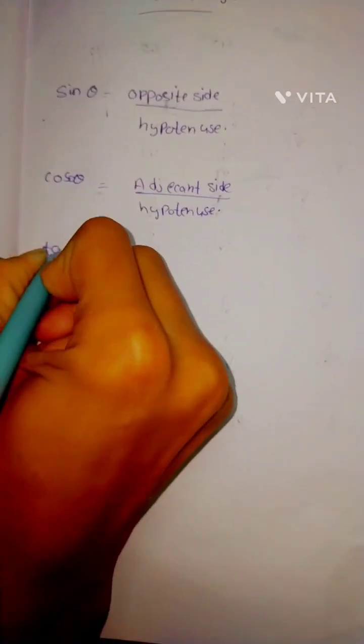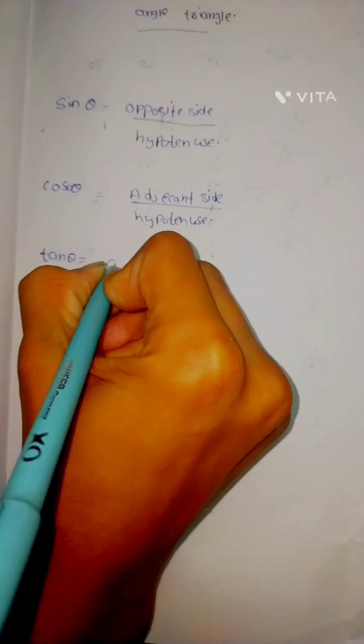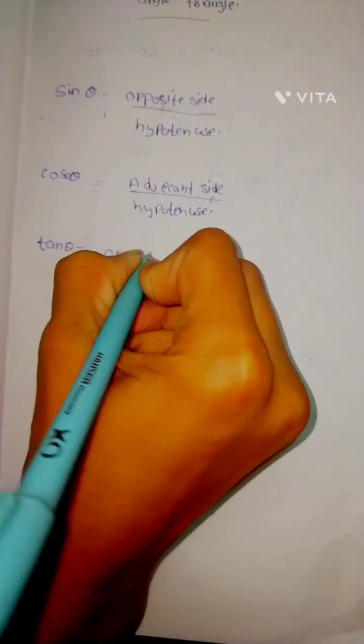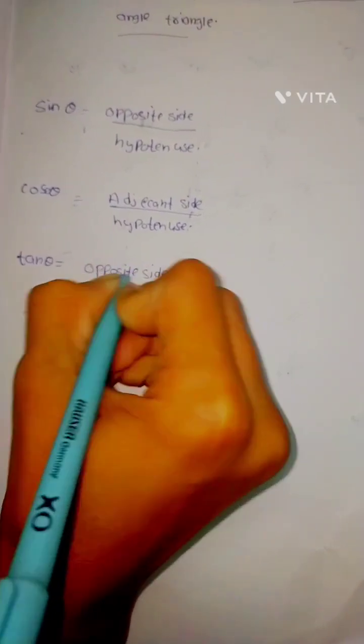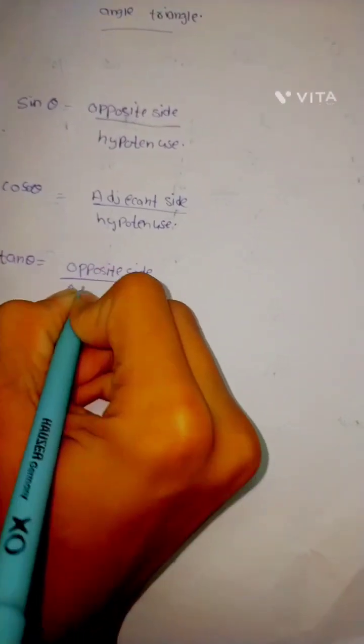Tan Theta equals Opposite Side by Adjacent Side.